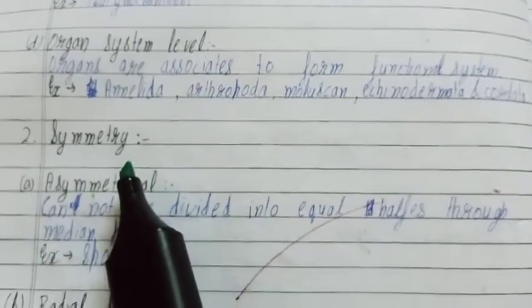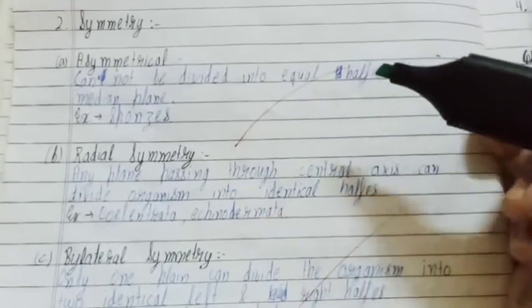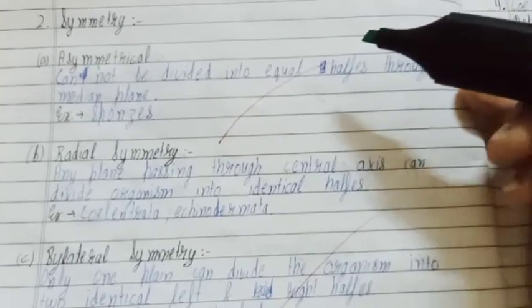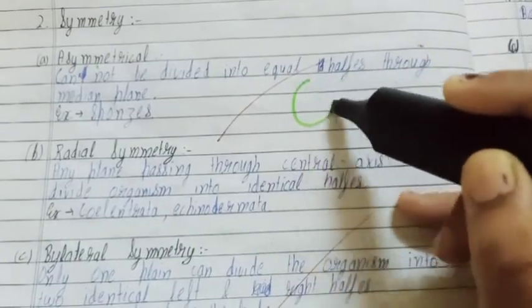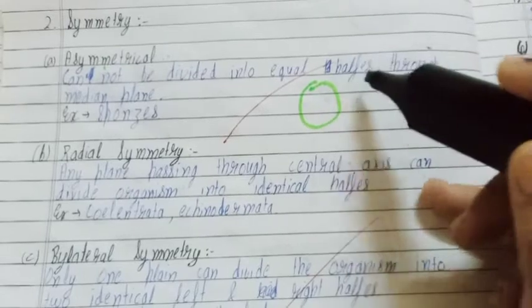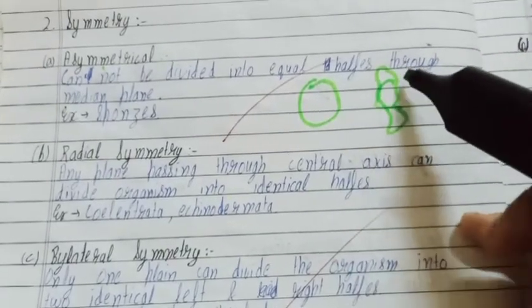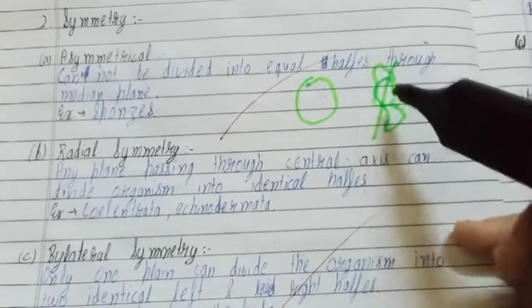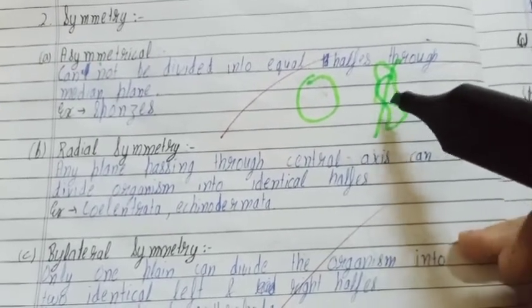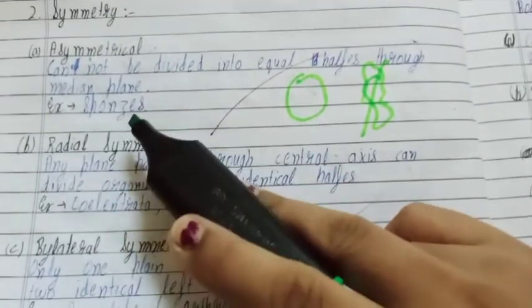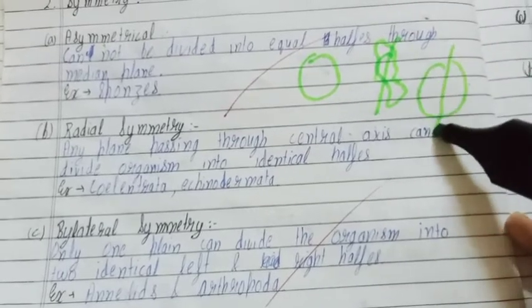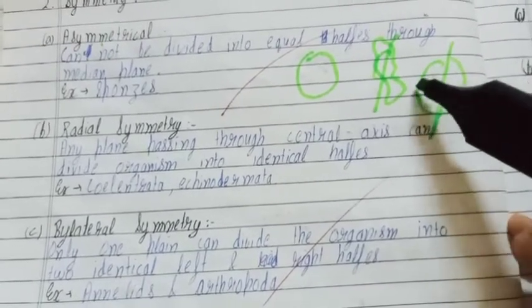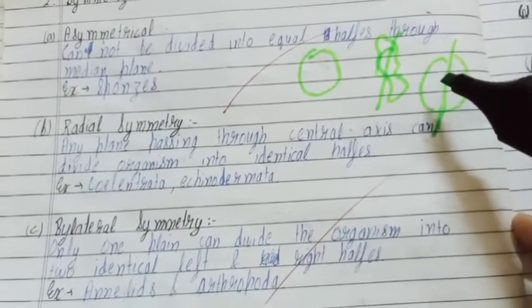Second basis is symmetry. Symmetry means if we cut an organism in the middle, how many parts are formed by cutting them. Asymmetrical means it cannot be divided into equal halves. If we cut any organism, we don't find two equal halves of this organism. Then it is known as asymmetrical. Examples are sponges.